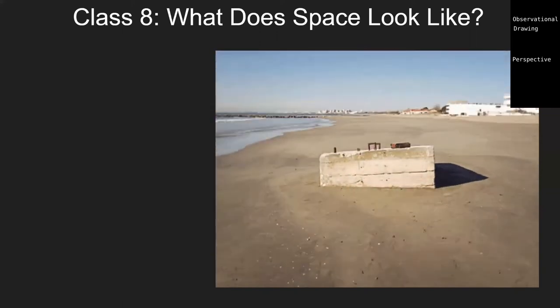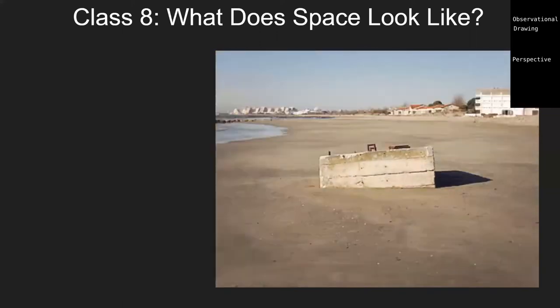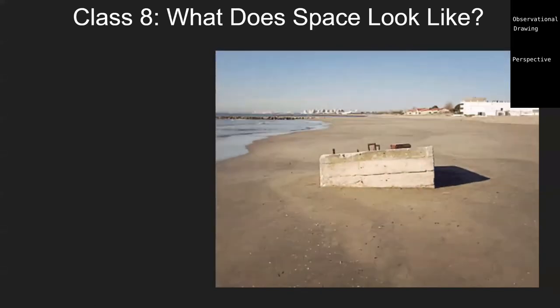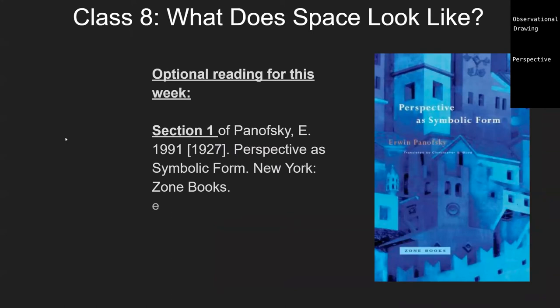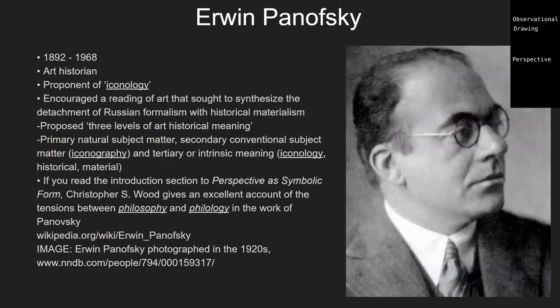It relates to how a camera works — the relationship between the size of a lens and its field of view. The way a camera works is also related to the history of perspective. For those who want to read about it, Erwin Panofsky is a very famous art historian whose book 'Perspective as Symbolic Form' really delves into the history of perspective in the West and what it means.